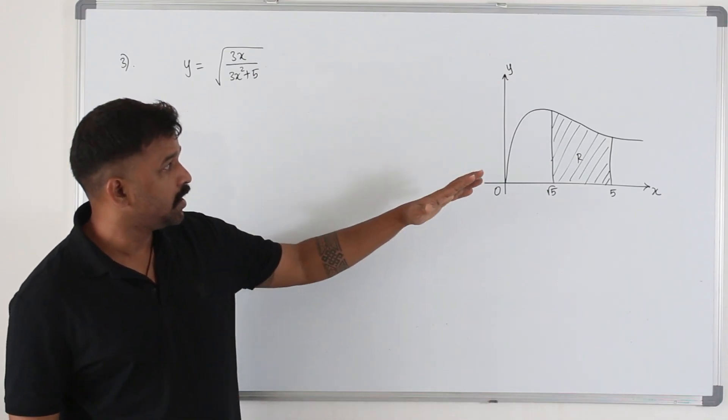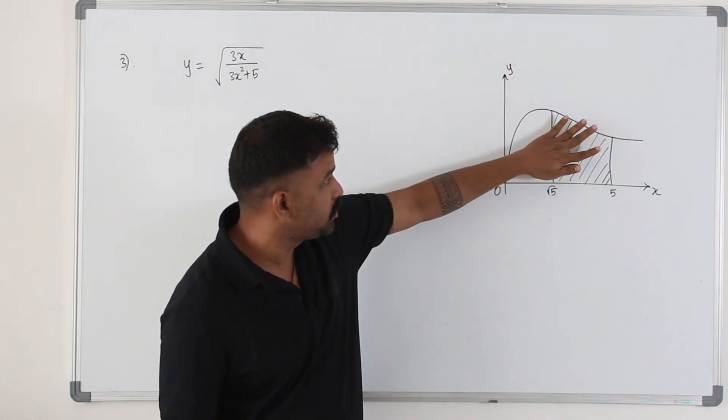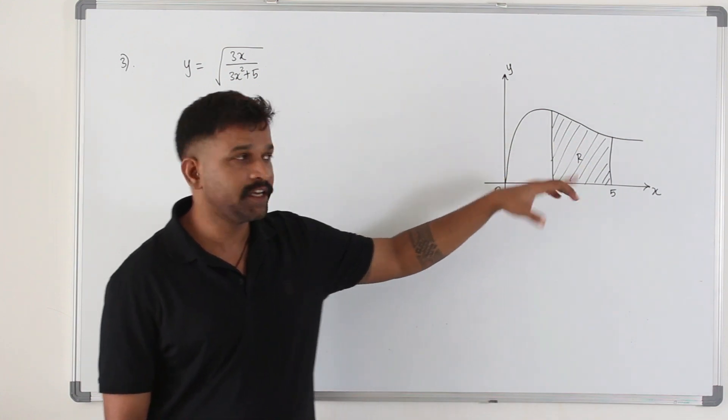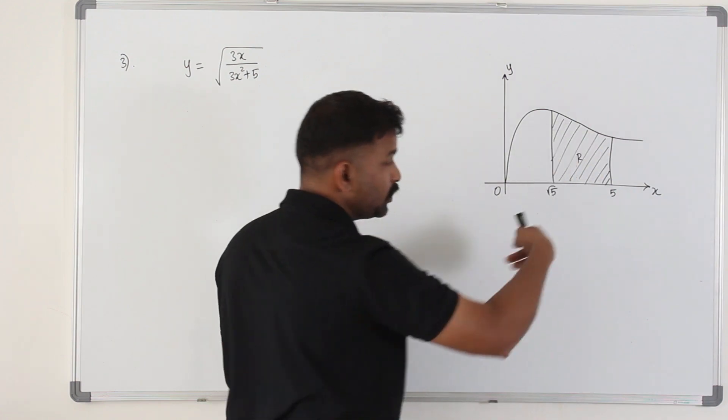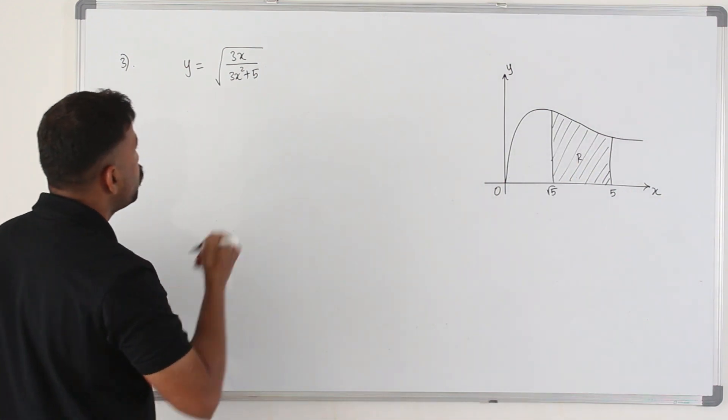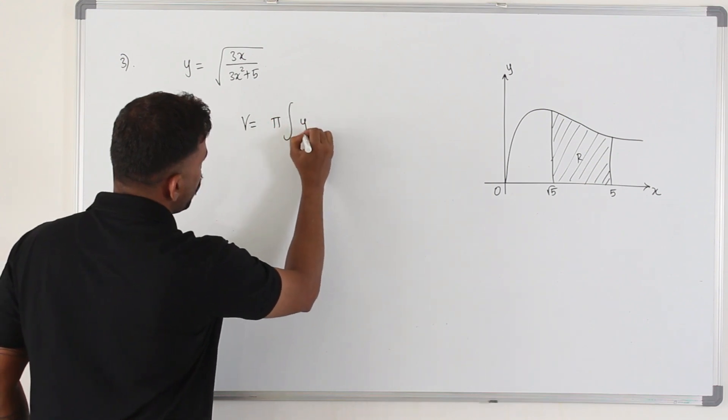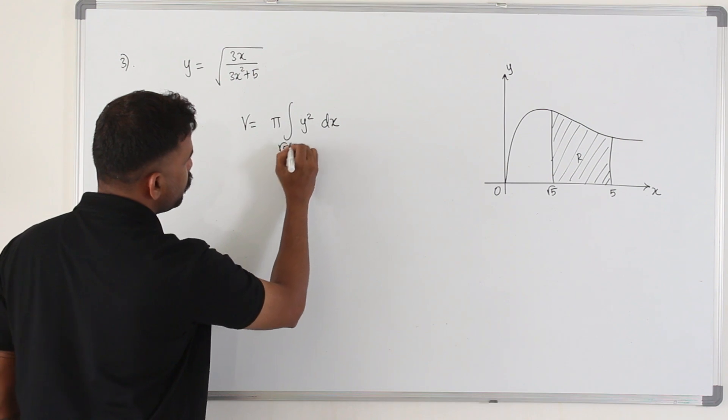So here we need to find the volume of the solid of revolution. That means if you take the 3D shape and rotate it around the x-axis 360 degrees, it forms a solid. We need to find the volume of the 3D shape. The formula to find the volume is pi integral y squared dx. The limit is square root of 5 to 5.